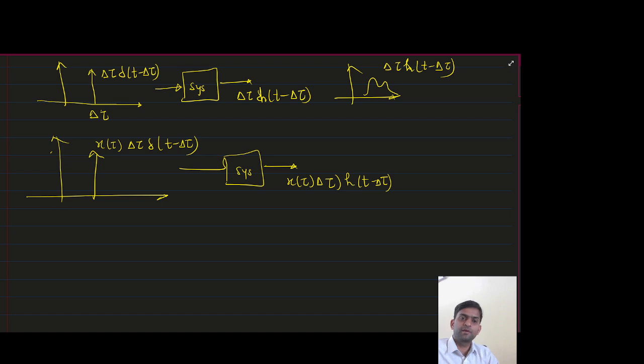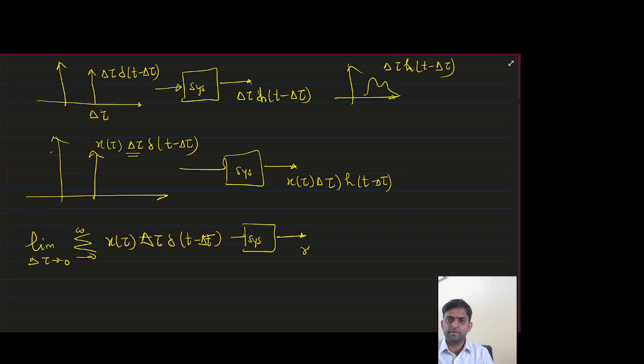If I apply limit, if I reduce this delta tau towards 0, so if I have limit delta tau tends towards 0, summation minus infinity to infinity x(tau) delta tau delta(t - delta tau). If it passes through the system, then this will be limit delta tau tends towards 0, summation minus infinity to infinity x(tau) delta tau h(t - delta tau).